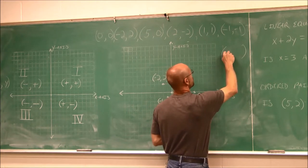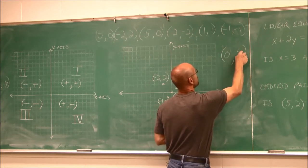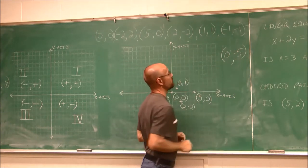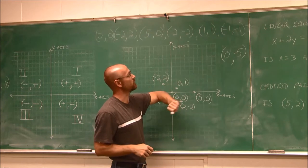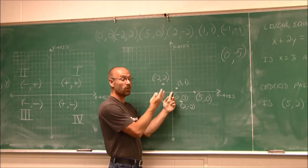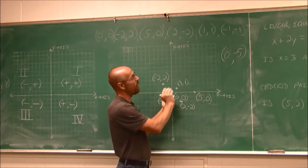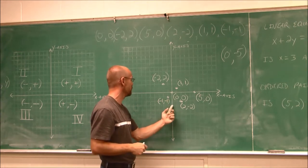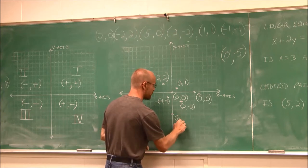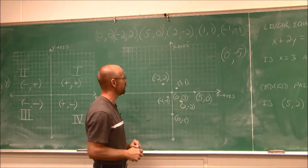Let's do one more — (0, -5). That tells us: 0 in x, so I'm not going left or right, but I am going down 5 because my y value is negative 5 — 1, 2, 3, 4, 5. This right here is that ordered pair (0, -5): 0 in the x direction, but down 5 in y.